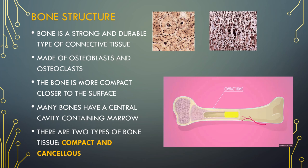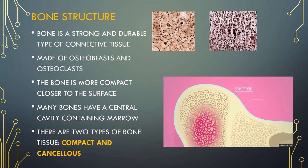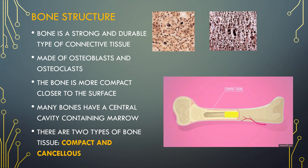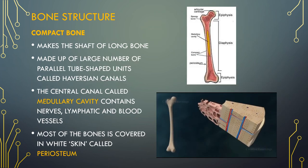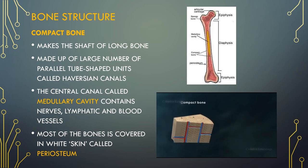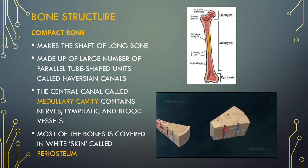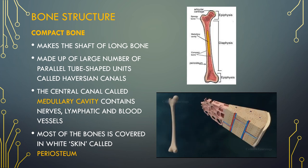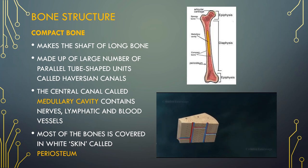Compact bone's function is protection and support and it is the external layer of all bones. Cancellous is light tissue that contains red bone marrow where white blood cells and platelets are produced. It is found in the hips, ribs, sternum, vertebrae, skull and ends of some long bones. Compact bone makes the shaft of long bones. It is hard, dense compact tissue that looks like a solid structure, but under a microscope it looks like a honeycomb full of holes. It has passageways containing blood vessels, nerves, lymph and capillaries, and is found on the outside of most bones and in the shaft of long bones.